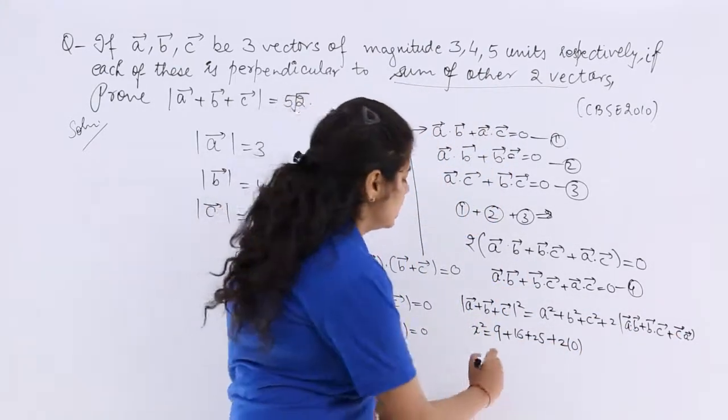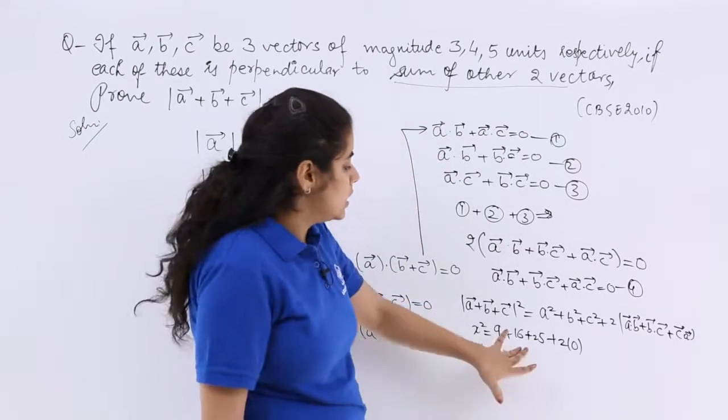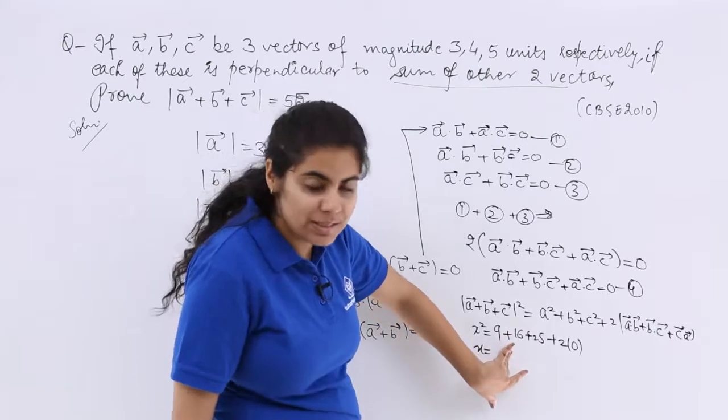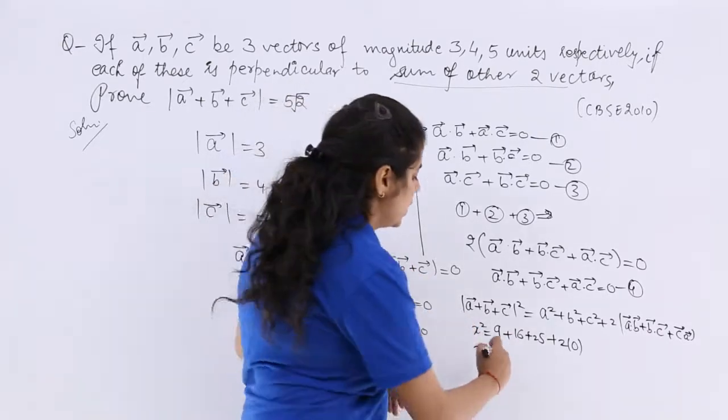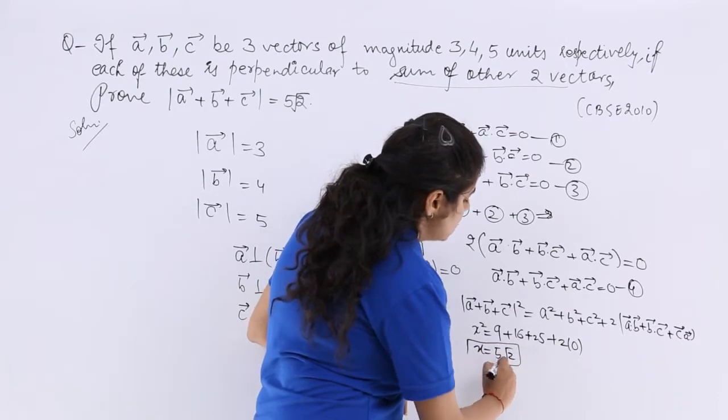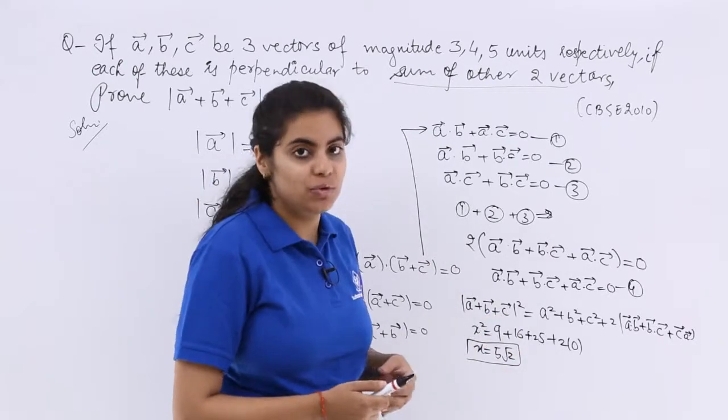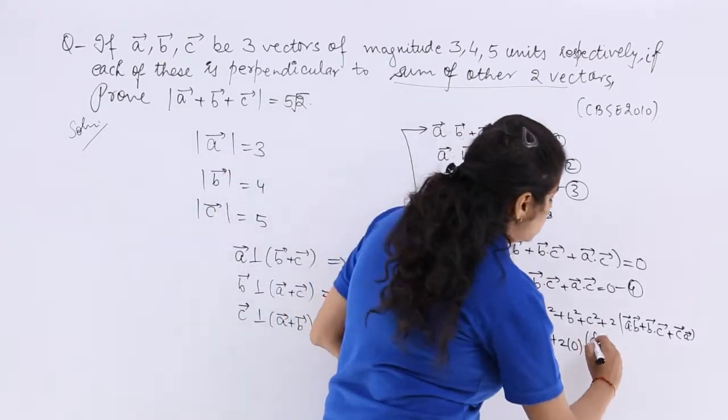So what is my answer? My X is what? It is under root of this whole addition. 16 plus 9 is 25. 25 plus 25 is 50. So root 50 is 5 under root 2. That means what was needed? Mod A plus B plus C is equal to 5 root 2. And where did we all gather this information?